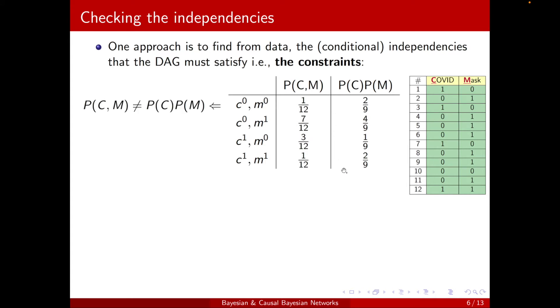And, however, here, for example, in this table, we see that they don't match. 2 over 9 is not the same as 1 over 12. So when they don't match, it means that C and M are actually dependent. And the set of conditional independencies is empty, because we just have two variables. This is the only thing we can check.